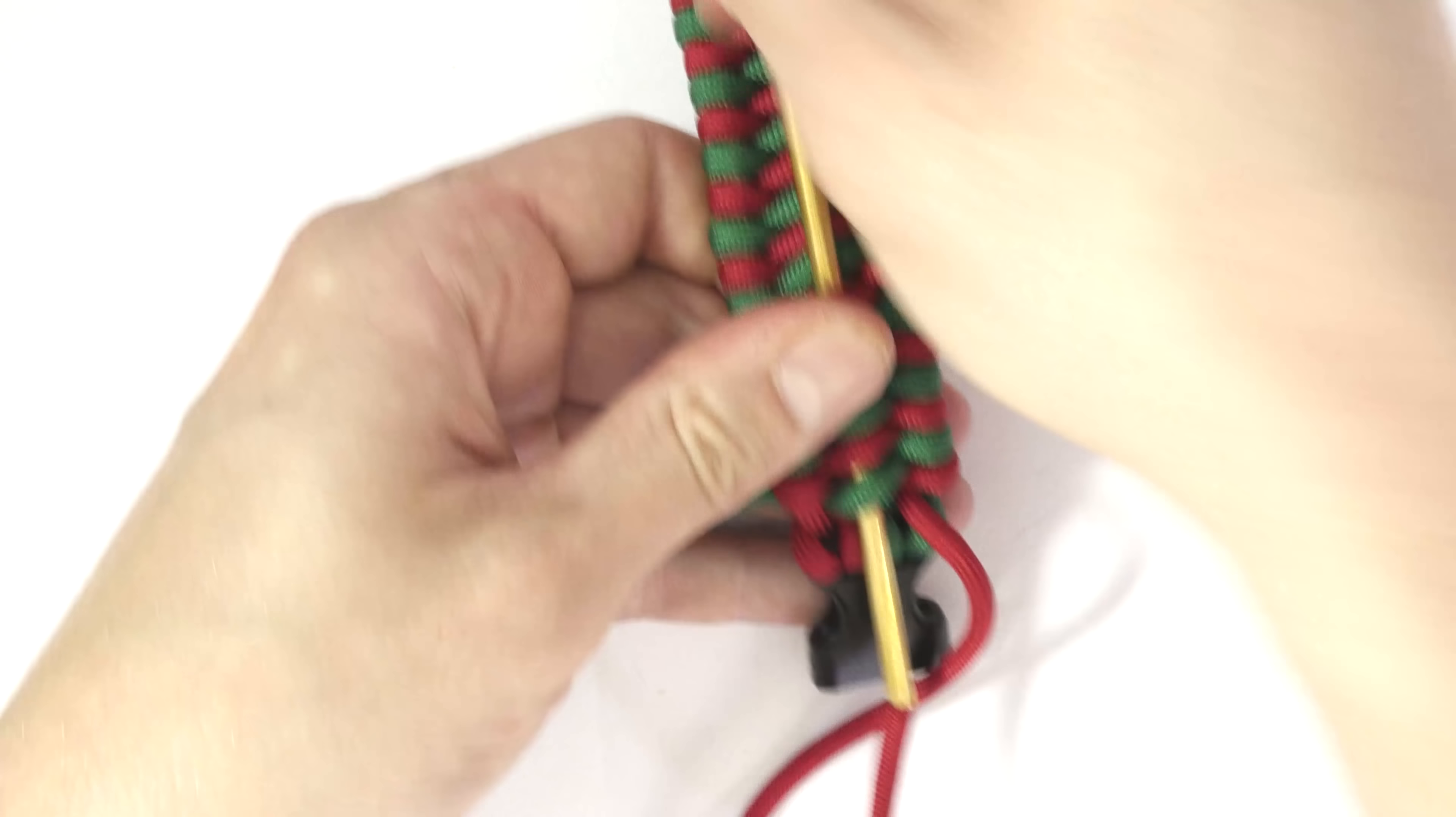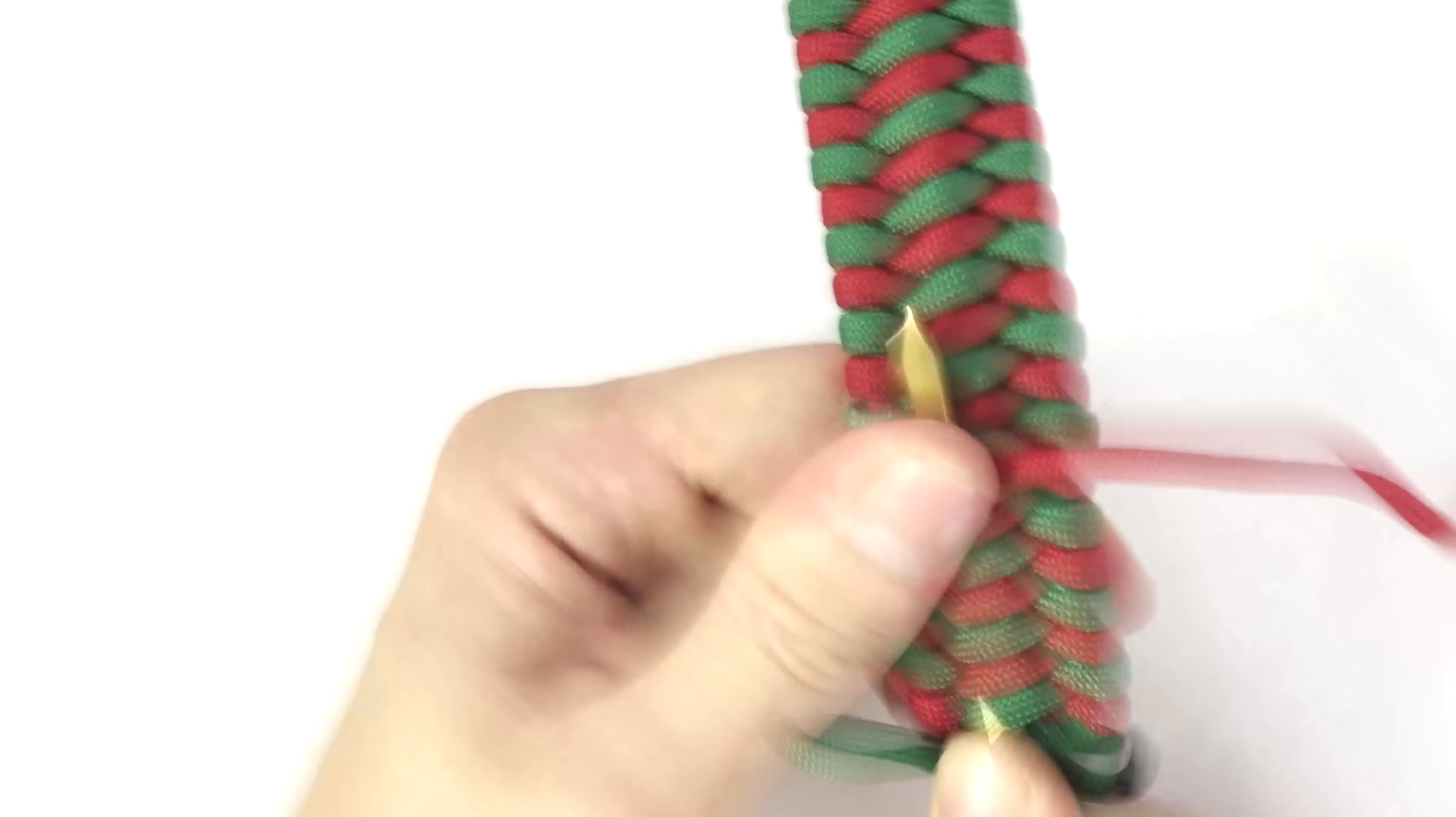Now take the other end and tuck it under as well. Like this. Trim the two ends. And you are done. Now in some cases you may want to melt the two ends a little bit, but since this is on the underside, melting the two ends can bother your wrist a bit. So you can leave it like this.